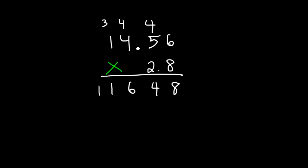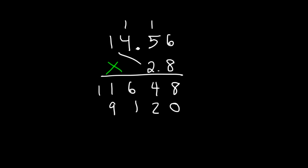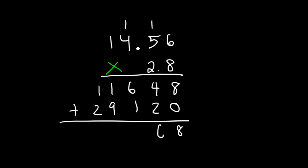So now, let's add a 0, and then let's multiply 2 times 6. 2 times 6 is 12 — carry over the 1. And then 2 times 5 is 10 plus 1, that's 11 — carry over the next 1. 4 times 2 is 8 plus 1, that's 9. And then 1 times 2 is just 2. So now we can add: 8, 4 plus 2 is 6, 6 plus 1 is 7, 1 plus 9 is 10 — carry over the 1, 1 plus 1 is 2, plus 2 is 4.